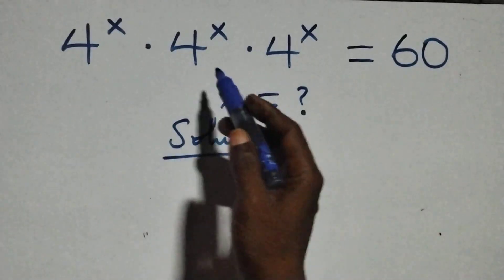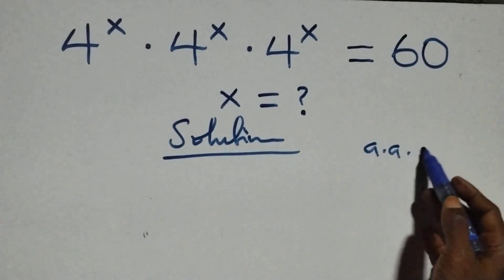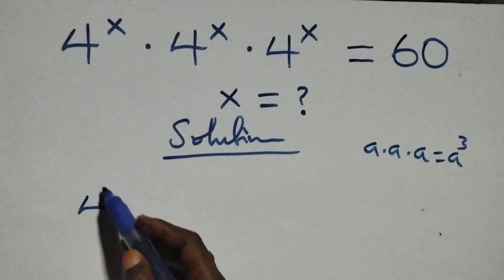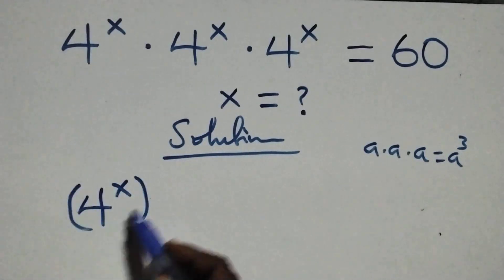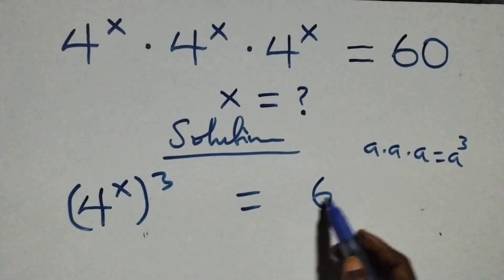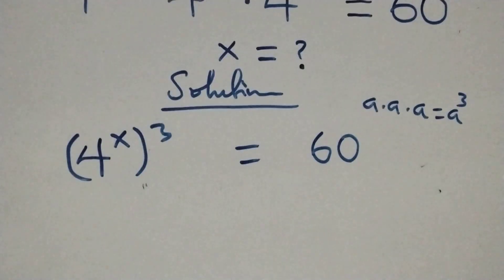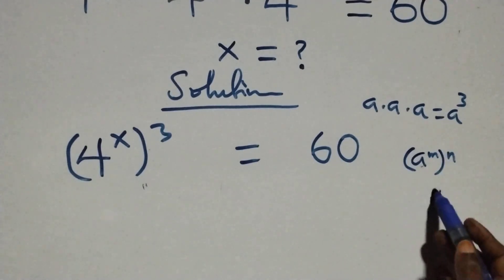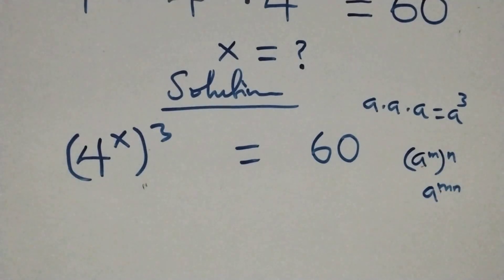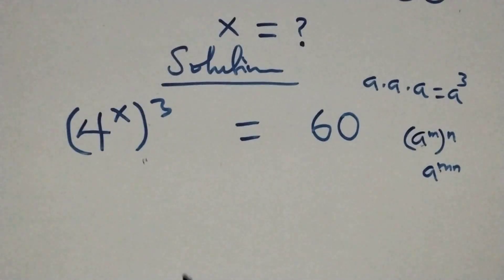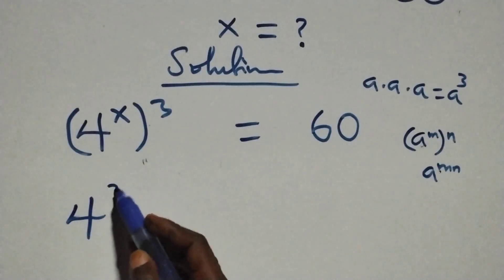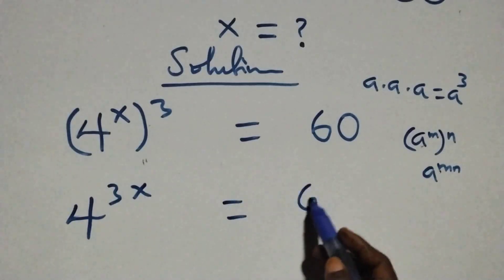From what we have here, this follows: we have a times a times a, which is the same thing as a raised to power 3. So here we can express this as 4 raised to power x, times 4 raised to power 3, equals 60. Then this follows: a raised to power n times a raised to power n is the same as a raised to power n·n — that is, the powers multiply. So what we have becomes 4 raised to power 3x equals 60.